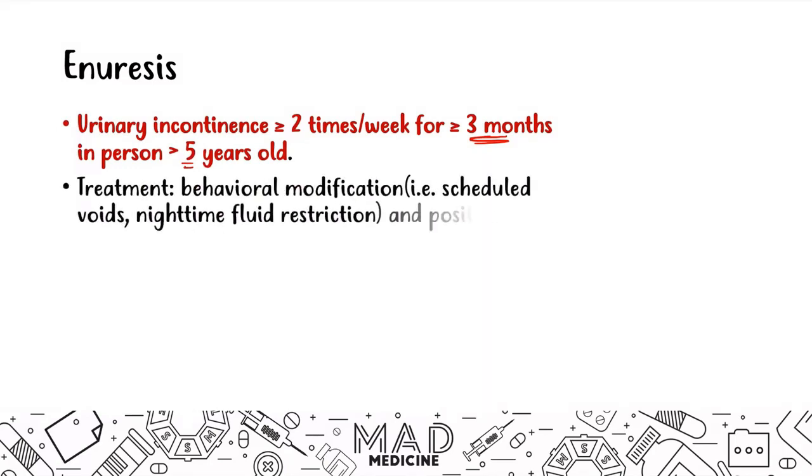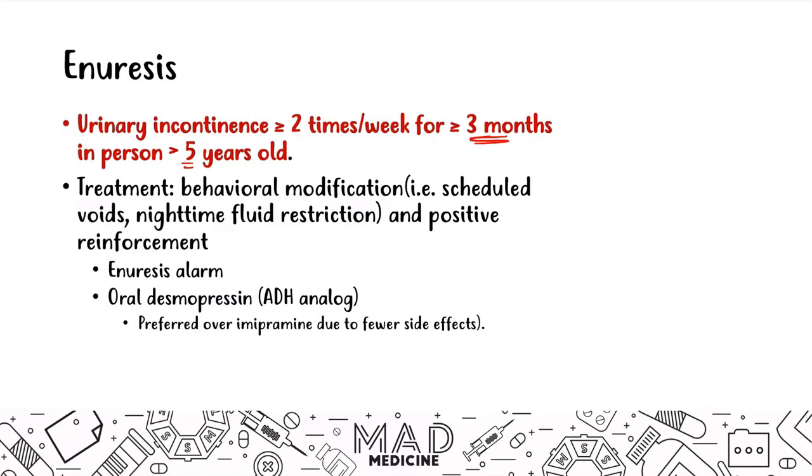The treatment for enuresis is behavioral modifications like scheduled voids, nighttime fluid restrictions, and positive reinforcement. In our first episode on classical conditioning we talked about enuresis alarms which train someone to wake up when they wet the bed. You can also give oral desmopressin, which is an antidiuretic hormone analog, and this is preferred over imipramine due to fewer side effects. Enuresis also occurs in N3 stage of non-REM sleep.